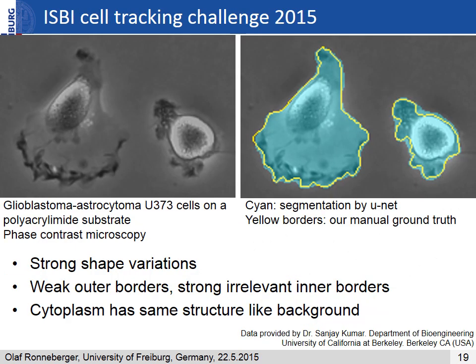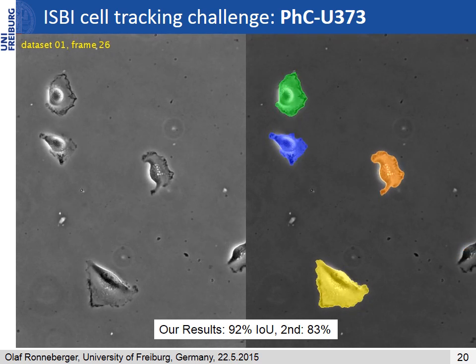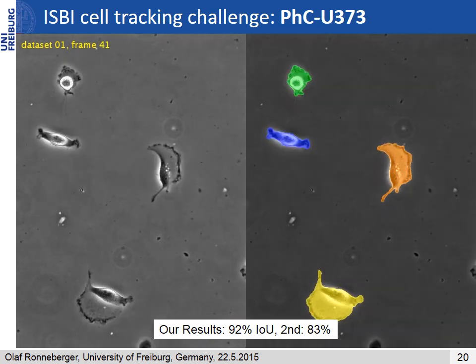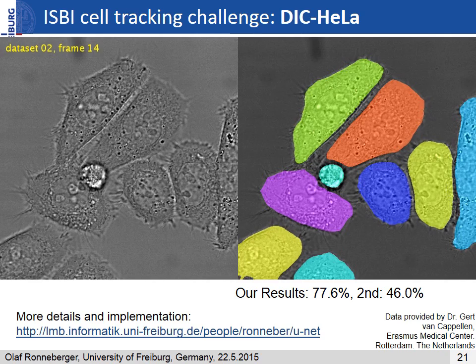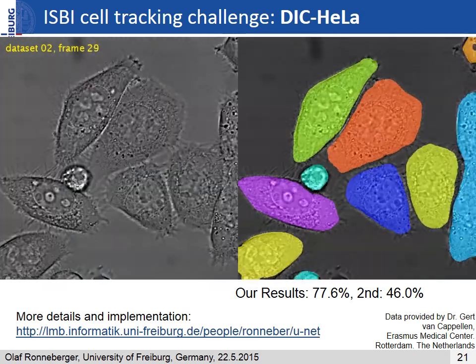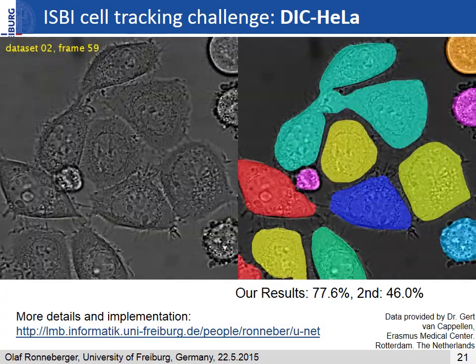We also participated in the ISBI Cell Tracking Challenge 2015. One dataset contains cells in phase contrast microscopy showing strong shape variations, weak outer borders, strong irrelevant inner borders, and cytoplasm with the same structure as the background. The output of the UNET is shown in cyan and the ground truth in yellow. We won on this dataset with an intersection over union of 92%, while the second-best method only reached 83%. Another dataset was even more challenging, containing touching and overlapping cells, partially invisible borders, and cells leaving the focal plane — here we won with an even larger margin.